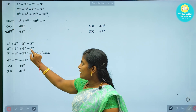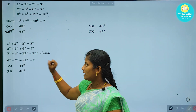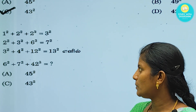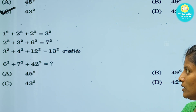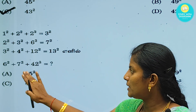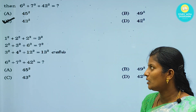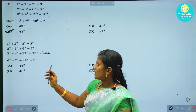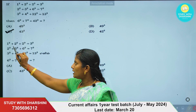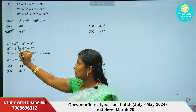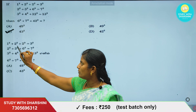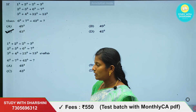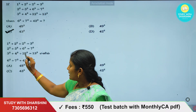Let's see the next question. 1²+2²+2² equals 3². 2²+3²+6² equals 7². 3²+4²+12² equals 13². Now the question is: what about 6²+7²+42²? You can solve this easily using a trick. If you add 1²+2²: 1+4 equals 5, and 2² equals 4, so 1+4 equals 5 which is related to 3². How do we apply this trick?